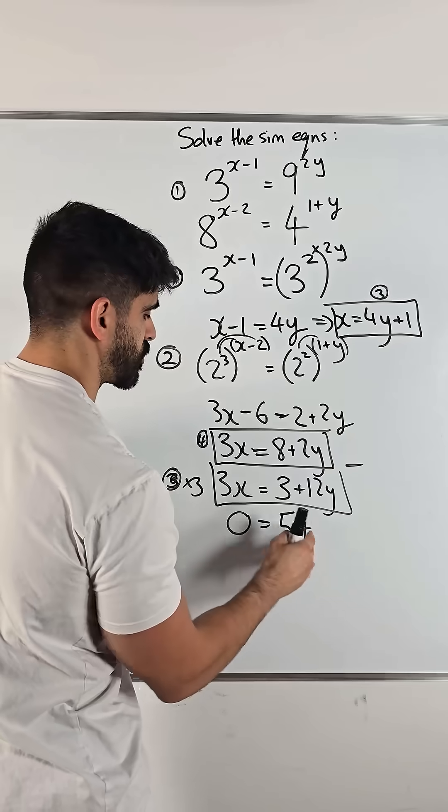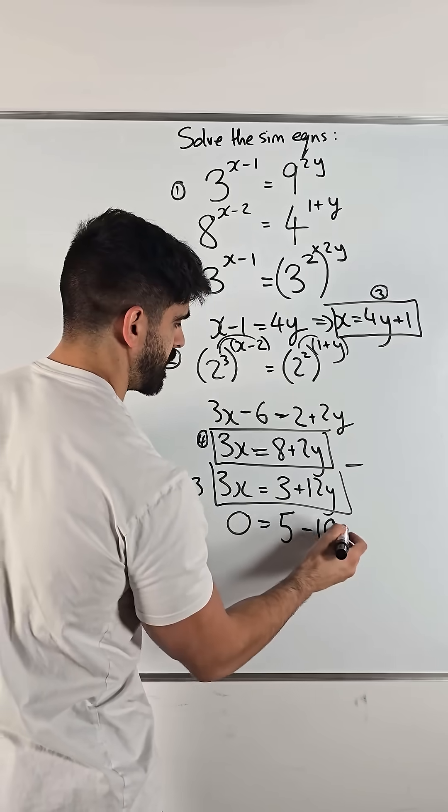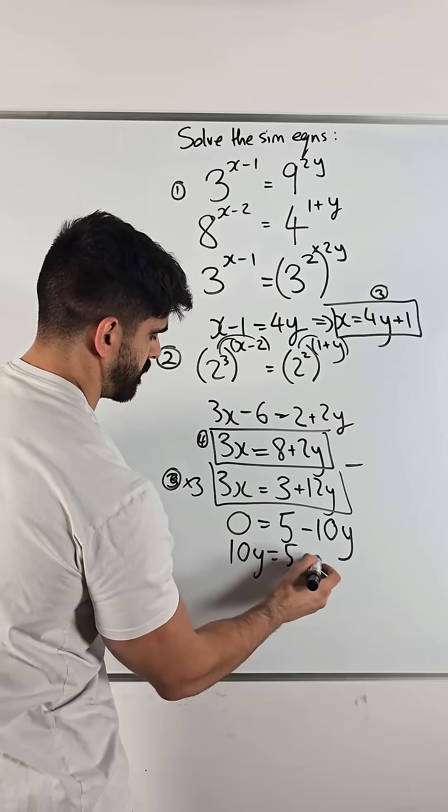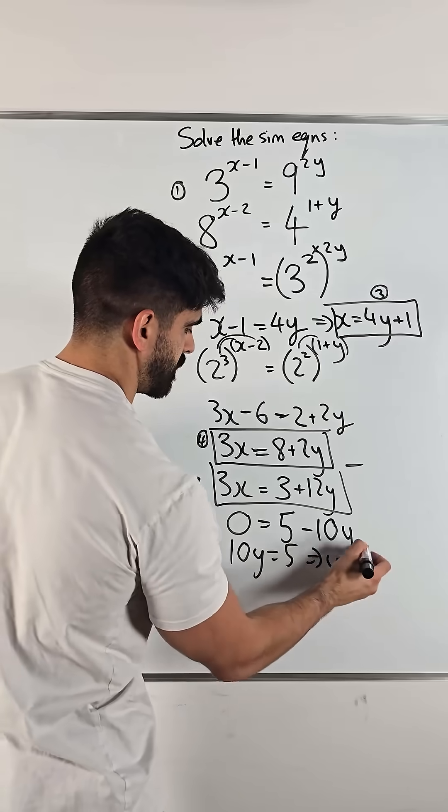And then, 2 minus 12y is actually negative 10y. So, 10y is 5. y is 5 over 10, which is a half.